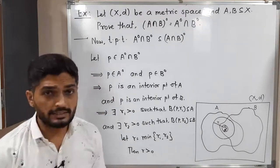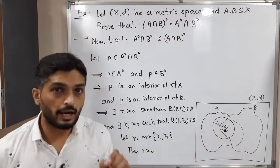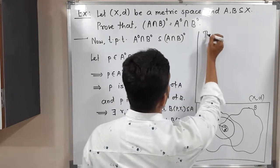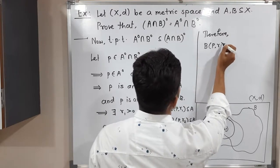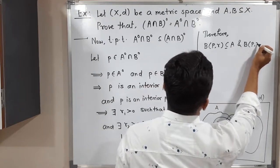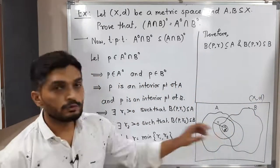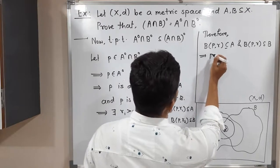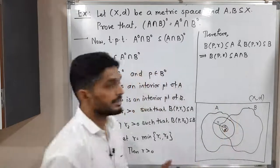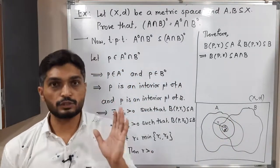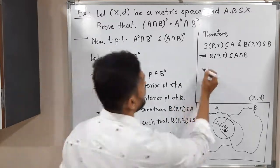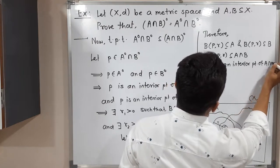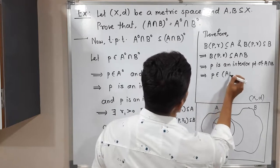Clearly R is greater than 0 since both R1 and R2 are greater than 0. Since R is the minimum of R1 and R2, the open ball with center P and radius R is a subset of B, and also a subset of A. So that small ball lies in both sets A and B, therefore the open ball with center P and radius R is a subset of their intersection A intersection B. By the definition of interior point, P is an interior point of A intersection B, so P belongs to the interior of A intersection B.